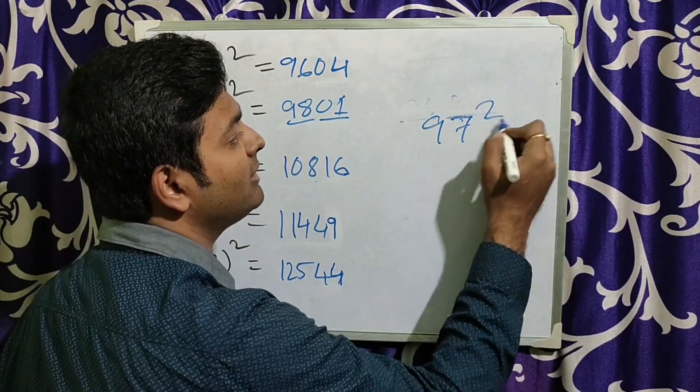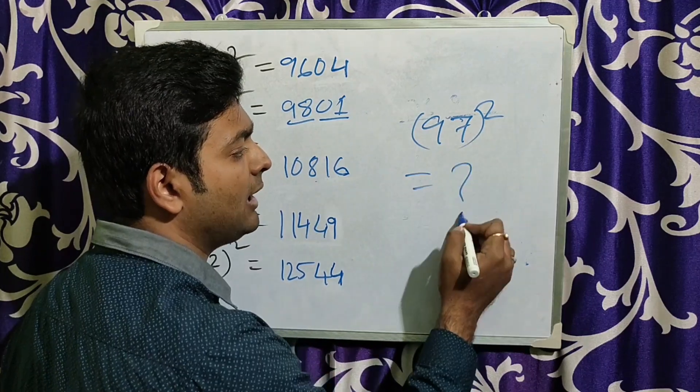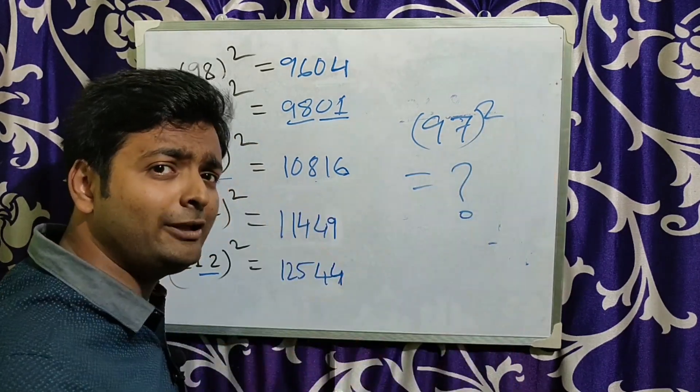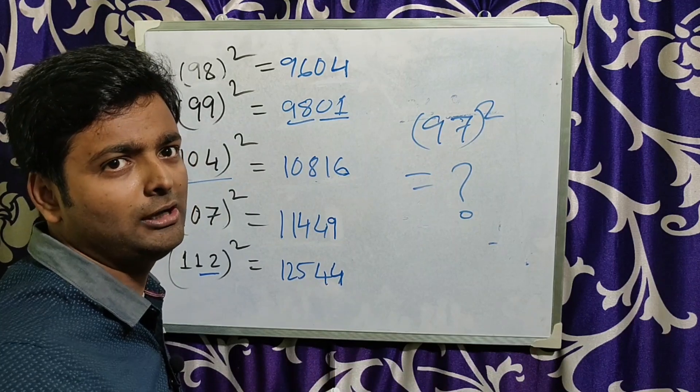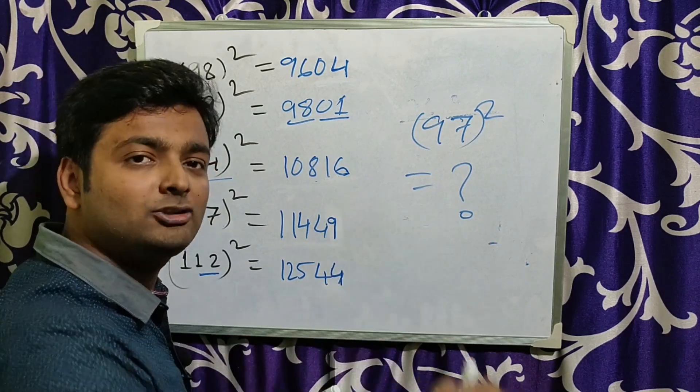Find the 97 square. Please guys find the value of 97 square and check yourself that you can do it or not within some seconds. And please comment me in the comment box.